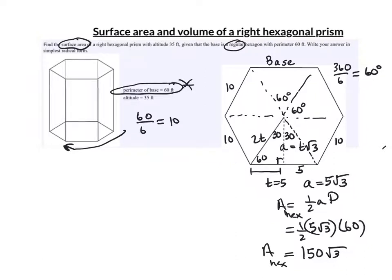Now we can use that information to find the total surface area and the volume. Here it goes. The total area of all the faces, there are 2 hexagons. And I just found the hexagon. It was 150 root 3. There are 2 of those.